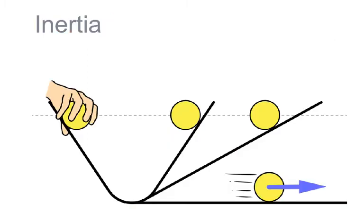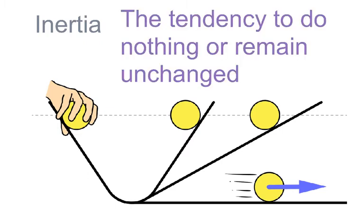Inertia is the property of matter by which it retains its state of rest or velocity along a straight line — a tendency to do nothing or to remain unchanged.